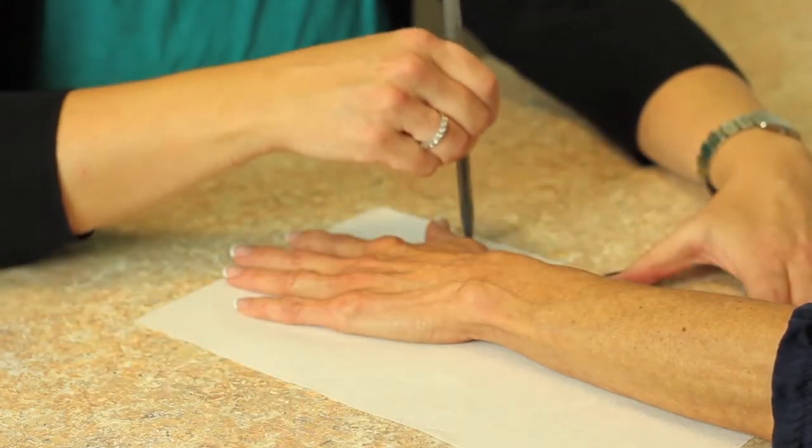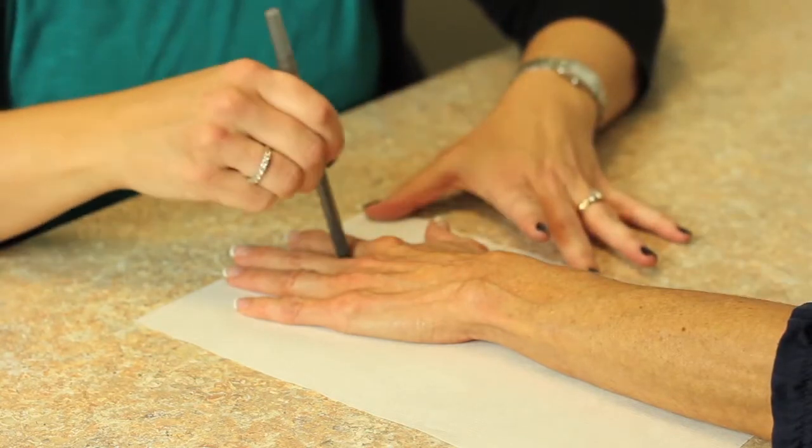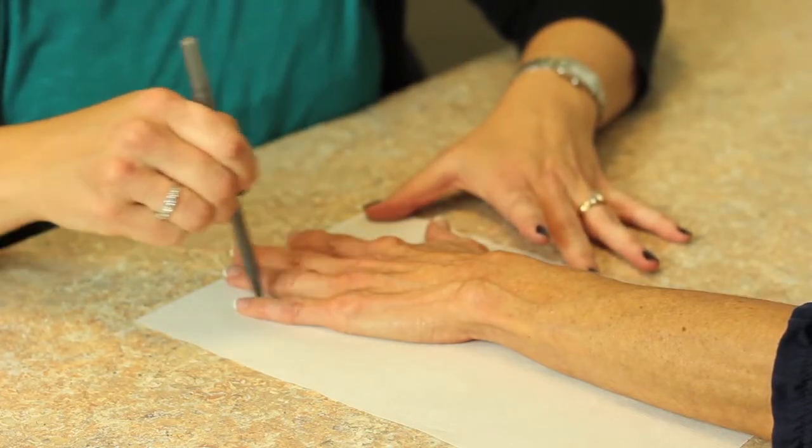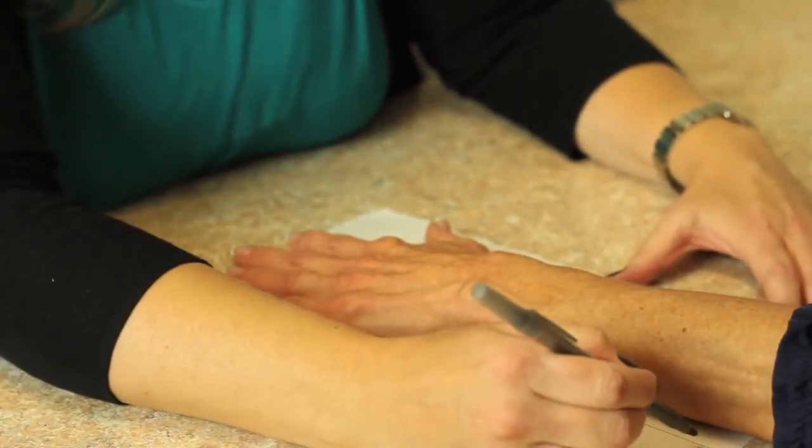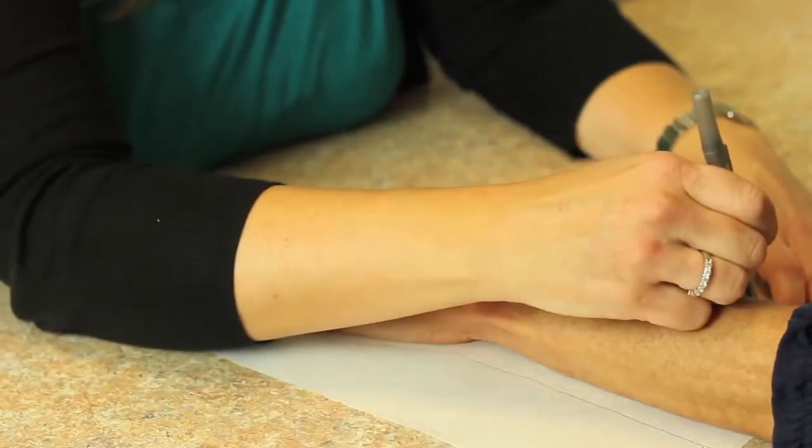To get yourself oriented, just draw out the whole hand. We want to be sure to include two-thirds the length of the forearm so I'm just going to mark up the arm here.